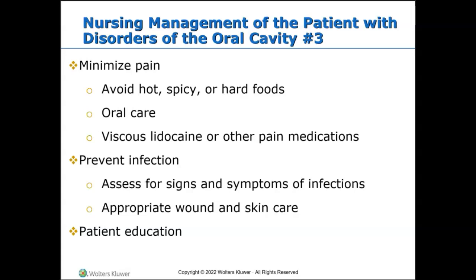For nursing assessment of swallowing ability, position the examiner's thumb and index finger on the patient's laryngeal protuberance and have them swallow. If they cough when simulating a swallow, that is indicative of aspiration.